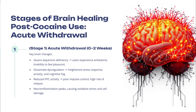Let's look at the stages of brain healing post-cocaine use. Stage one is the acute withdrawal stage — zero to two weeks. Key brain changes include: significant anhedonia, the inability to feel pleasure, attributed to dopamine deficiency; glutamate dysregulation causing a heightened stress response, anxiety, and cognitive fog; reduced prefrontal cortical activity leading to poor impulse control and high risk of relapse; and substantial neuroinflammation causing oxidative stress and cell damage. These are the symptoms of acute withdrawal, characterized initially by a crash phase followed by an agitation phase.